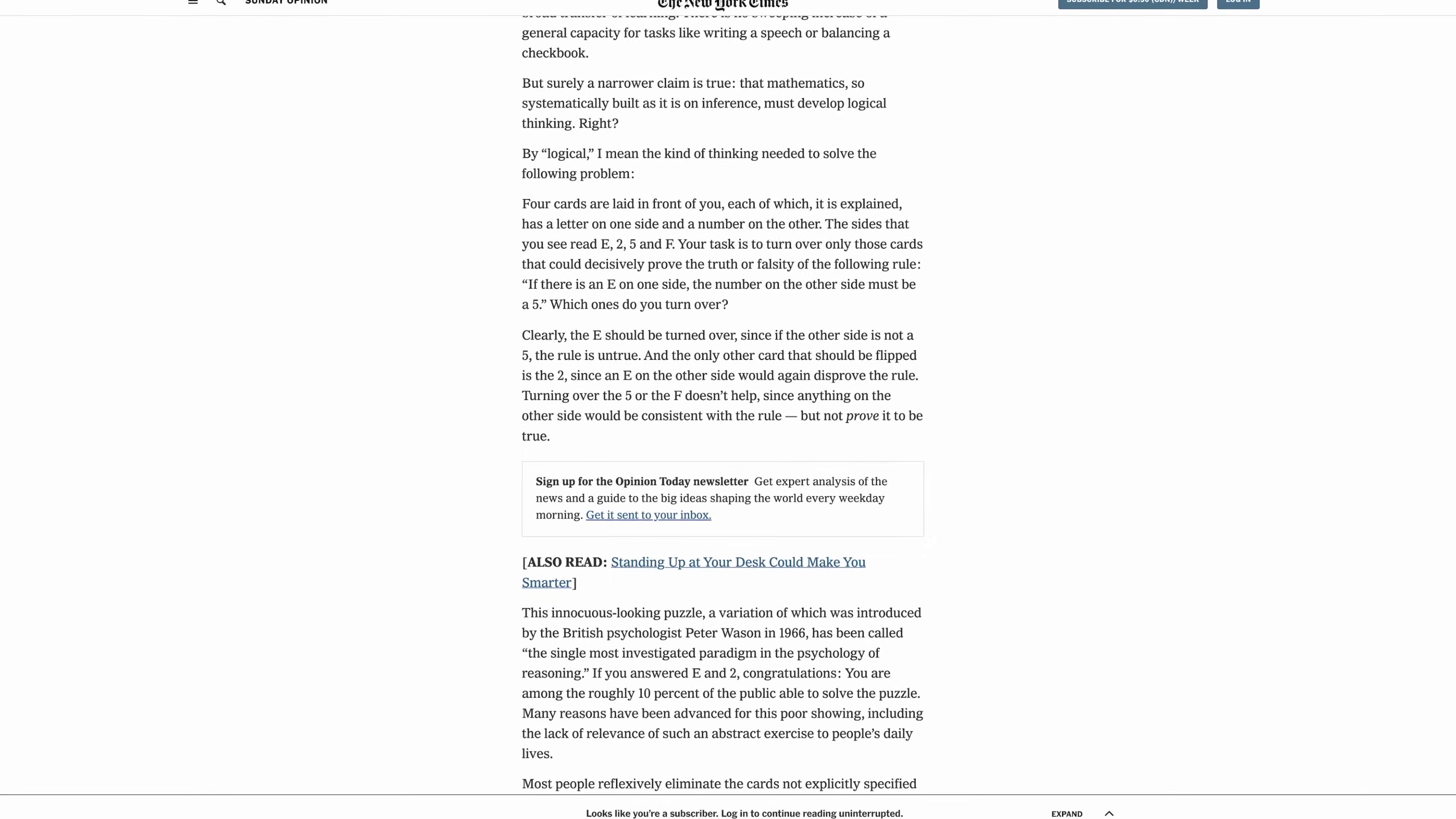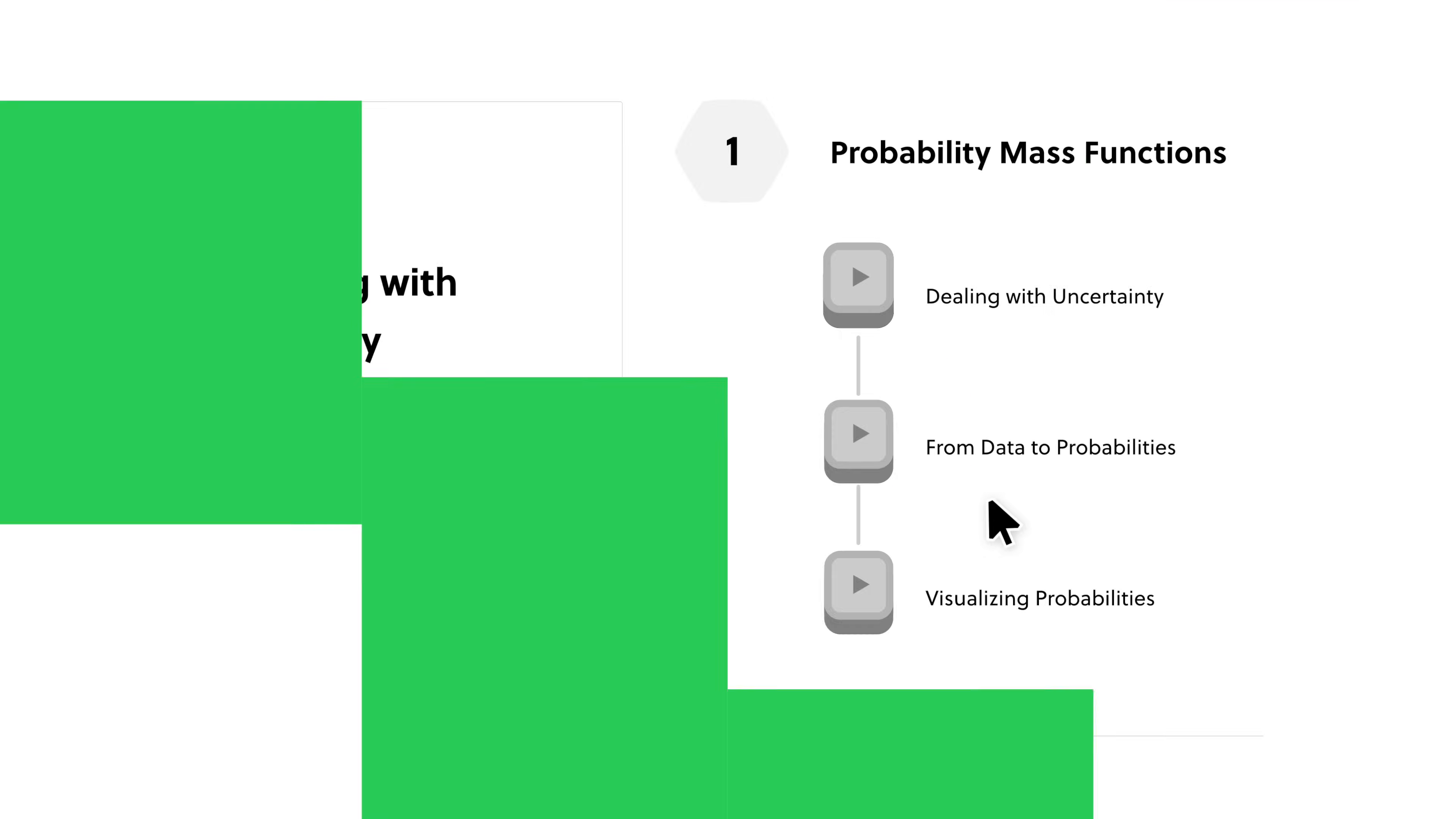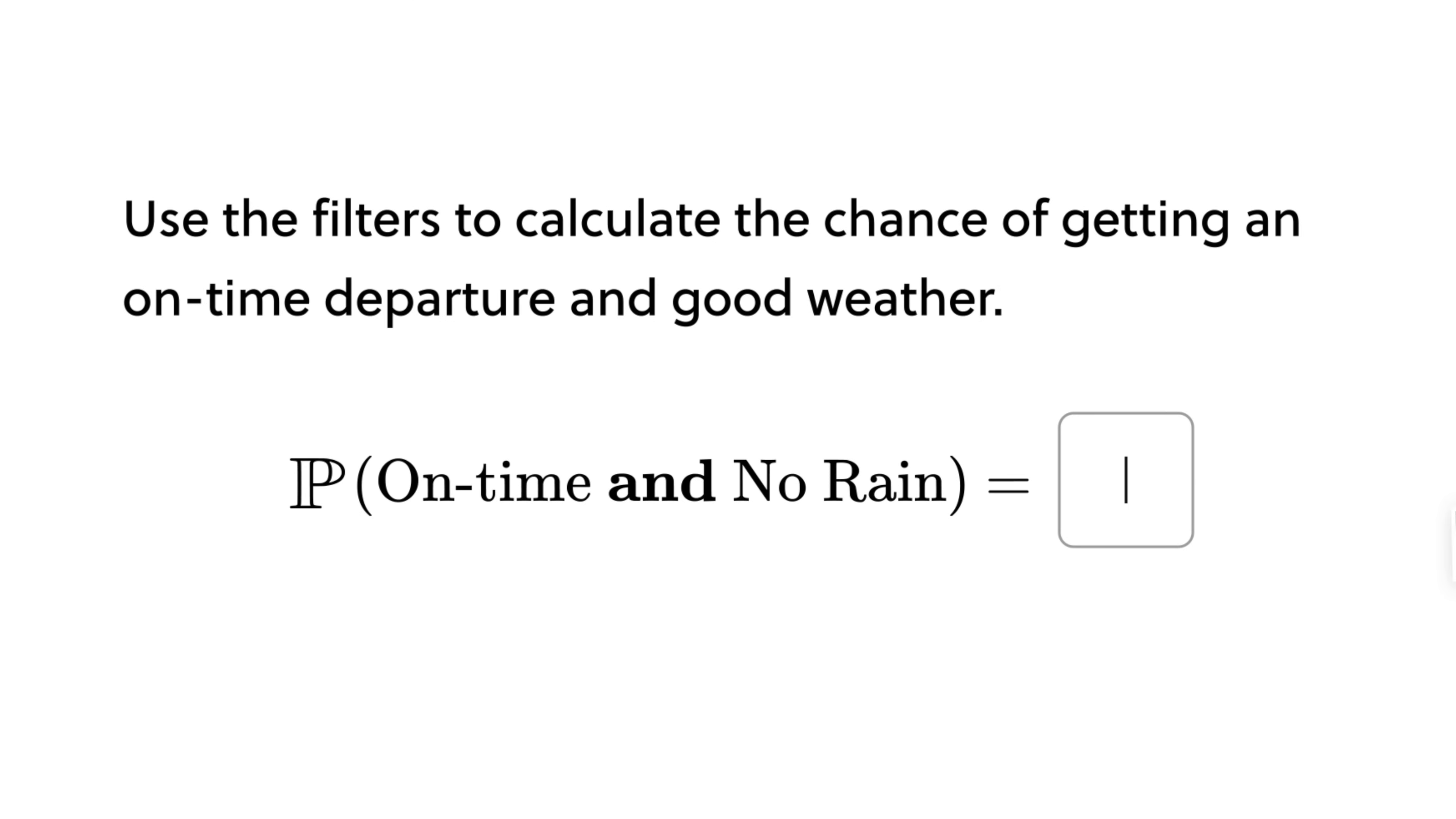Research shows that studying higher mathematics can sharpen your logical thinking. If you want to build on that, Brilliant is the perfect platform. I've just started on their Predicting with Probability course, which applies mathematical reasoning to make informed decisions, like being able to predict which airline is least likely to have a delay due to weather.